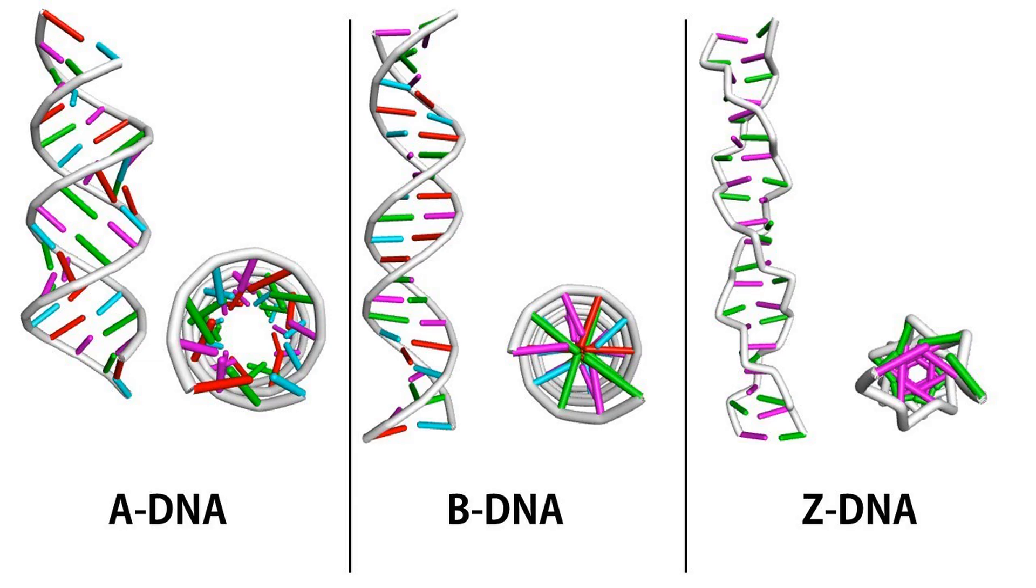Z-DNA, on the other hand, is left-handed, as the helix twists in the opposite direction, which is made possible when the backbone of both strands form a zigzag pattern. The major and minor grooves of it are almost indistinguishable.